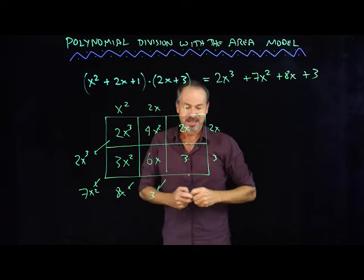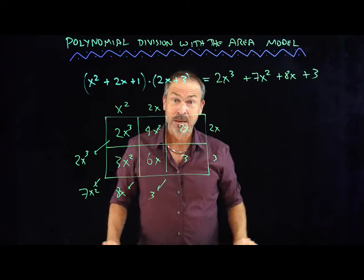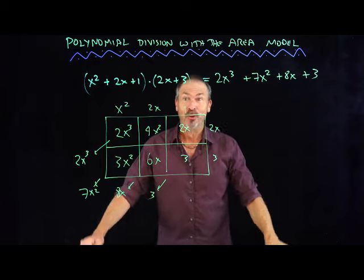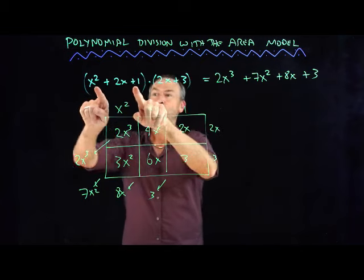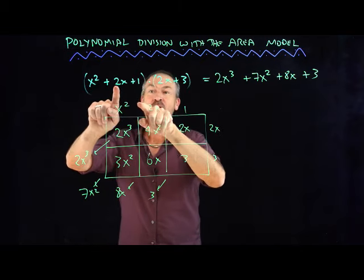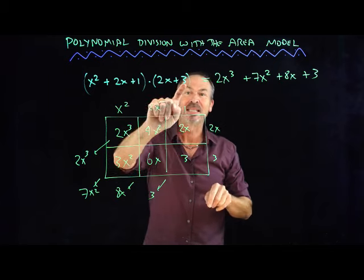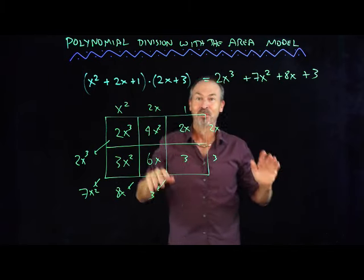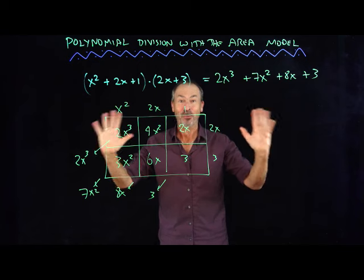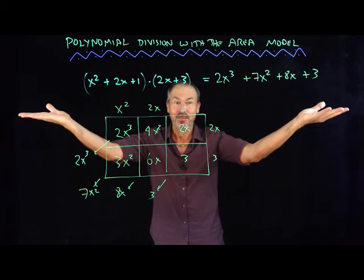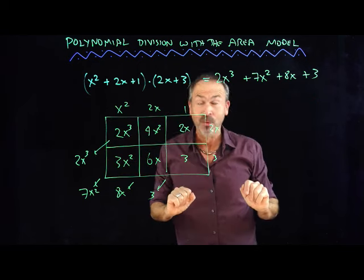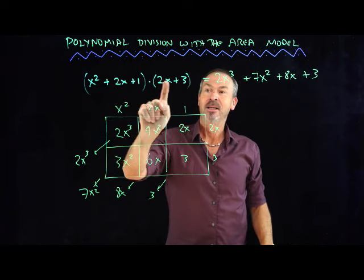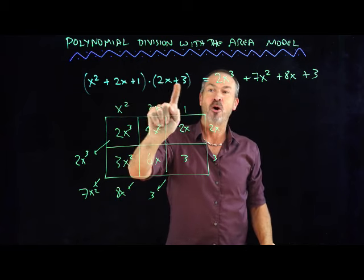Now here's a funny thing. In algebra class in high school, people forget that x can actually be a number. For example, if x is 10 here, I've just worked out that 121 times 23 is apparently 2783. I was on the base 10 calculation. Actually, if x is 2, I've just shown that 4 + 4 + 1 — that's 9 — times 4 + 3, which is 7.